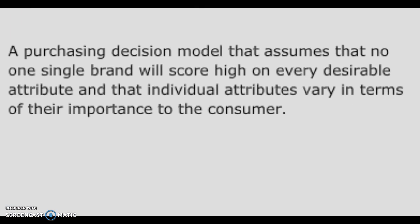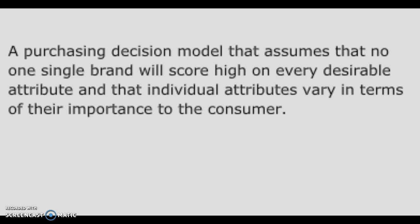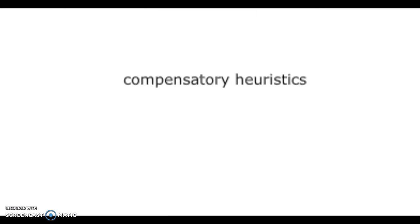Number 6. A purchasing decision model that assumes that no one single brand will score high on every desirable attribute and that individual attributes vary in terms of their importance to the consumer. That is compensatory heuristics.